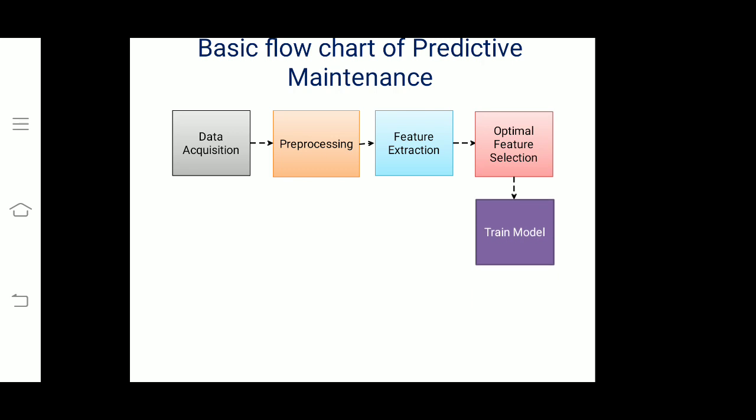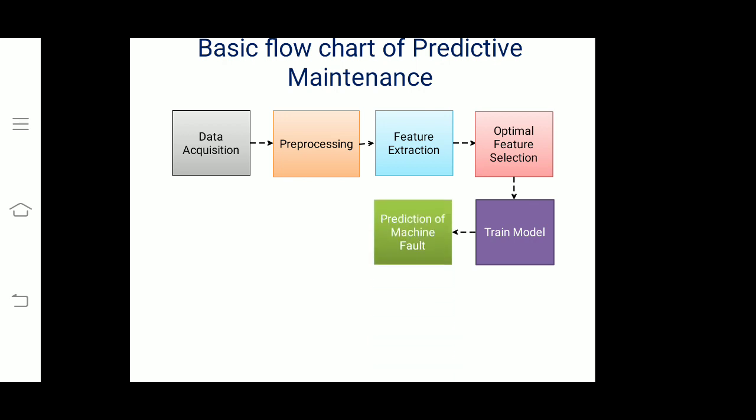Finally, the most important step is training the model. When training a model, important parameters to watch include overfitting and underfitting — your model should be neither overfitted nor underfitted. This depends on your data type, filtering accuracy, and optimal feature selection. With a well-trained model, you can predict the fault type in your machine — for example, a rotor fault. This is the basic flowchart of predictive maintenance, applicable to infrared, vibration, acoustic emission, and other approaches.